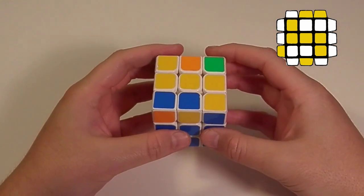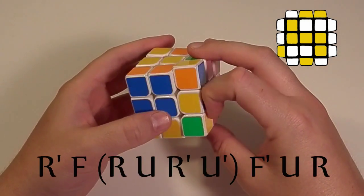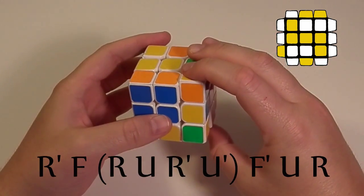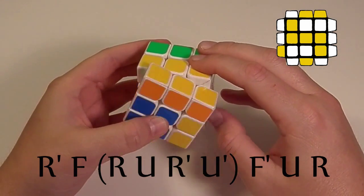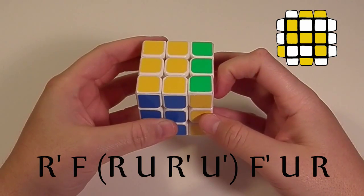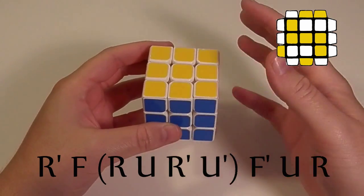And this is the algorithm. So, R prime, F, then you do the sexy move, R, U, R prime, U prime. Then you do F prime, U, R. And that will orient your layer.